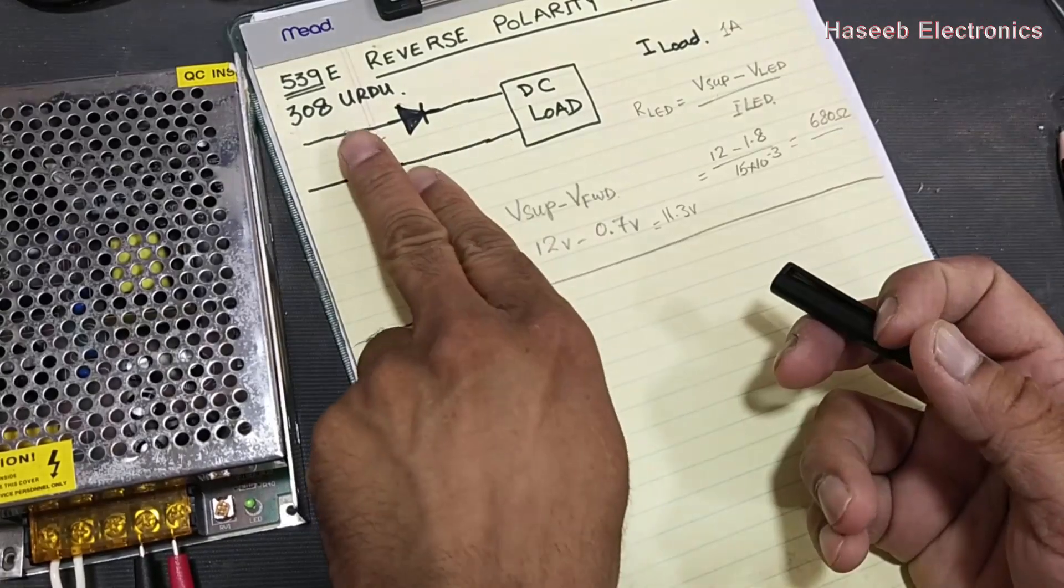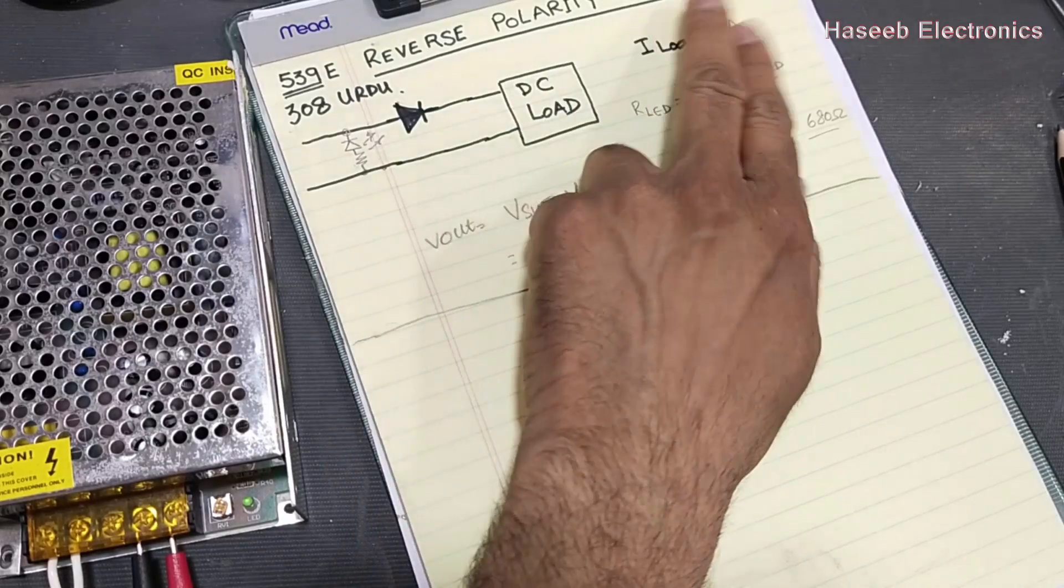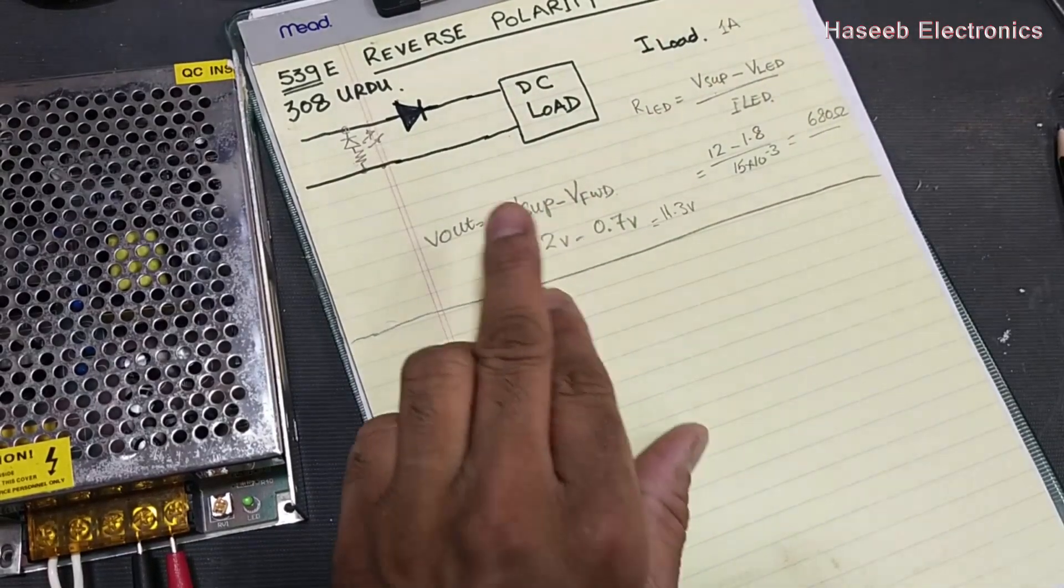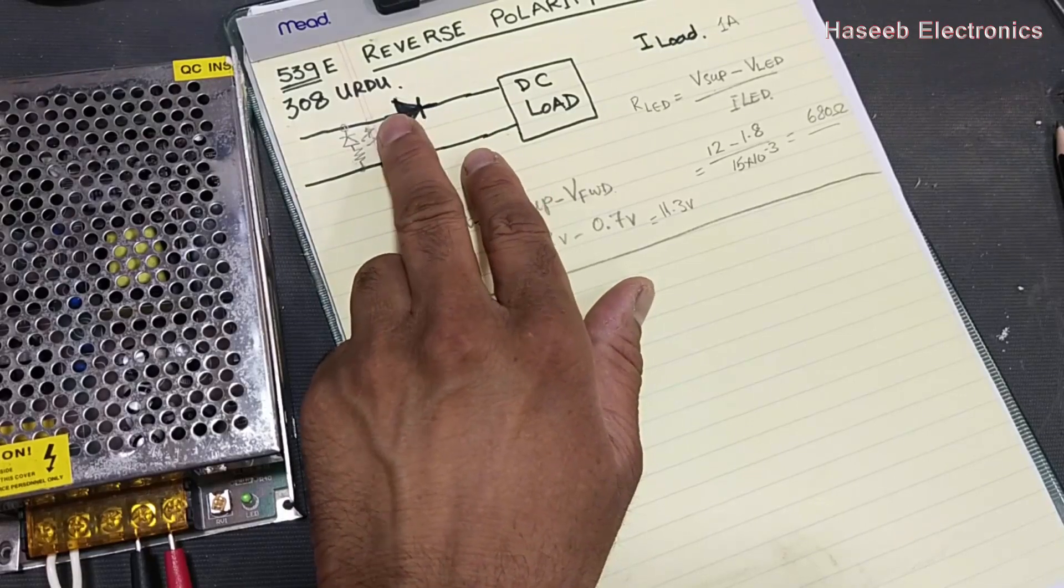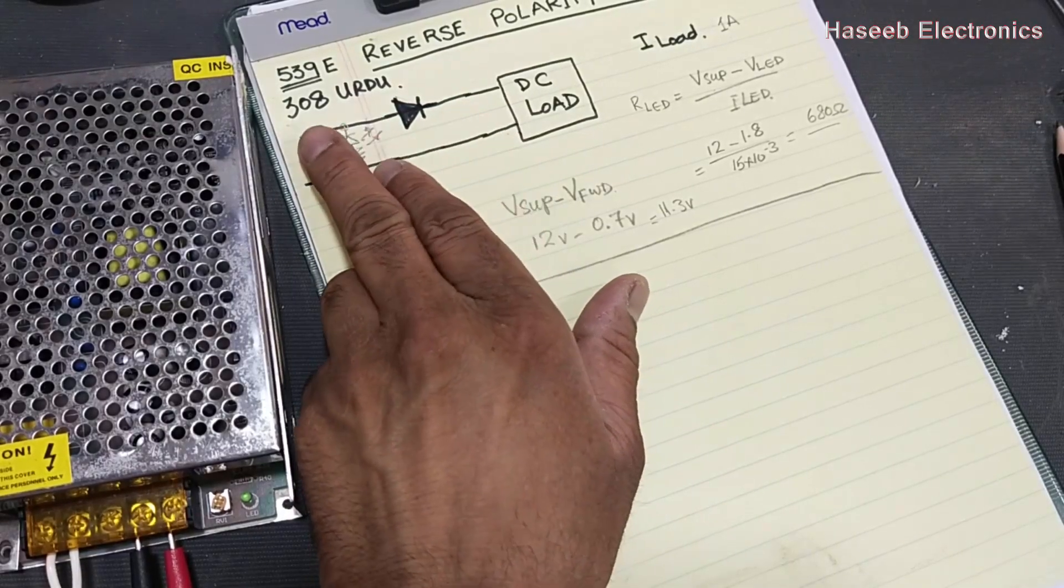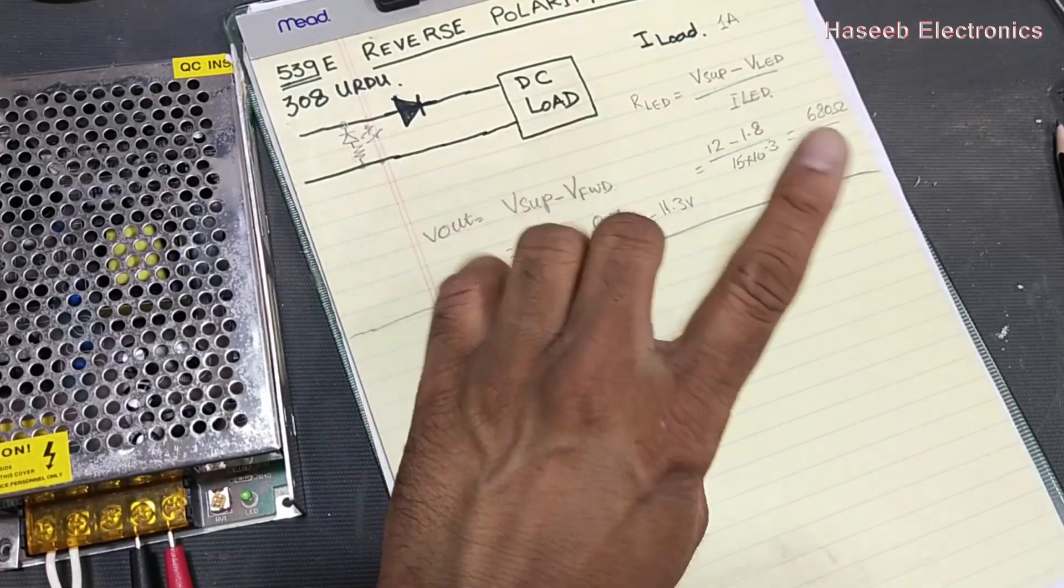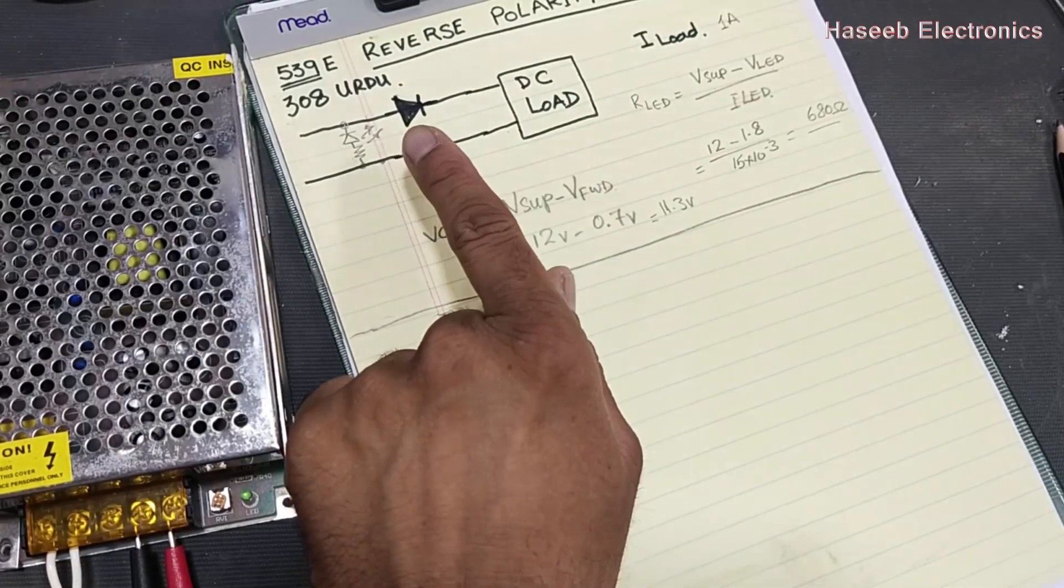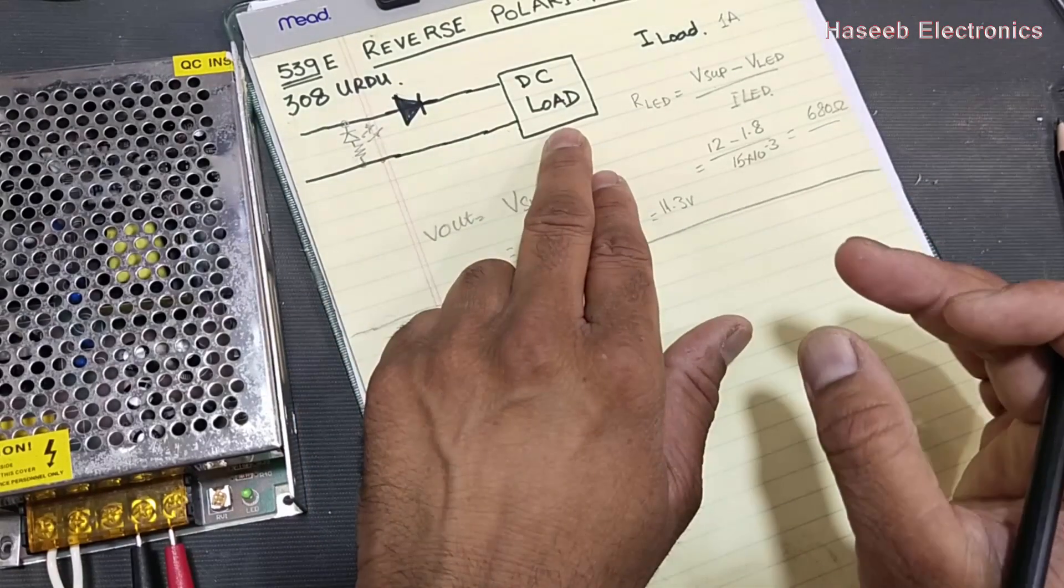Welcome back to my channel. In last video 539 for reverse polarity protection in DC circuit, we discussed we can use a rectifier diode in one line, either positive or negative, so it will drive the load in the good direction. In reverse polarity, the diode will block the current.